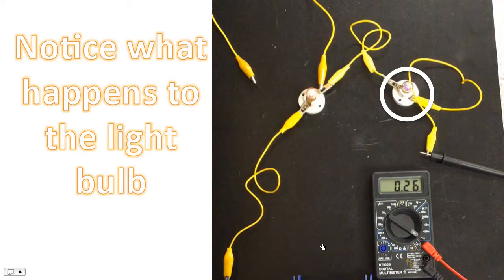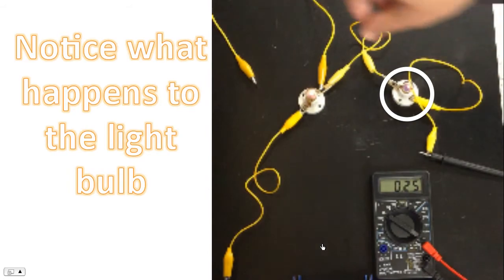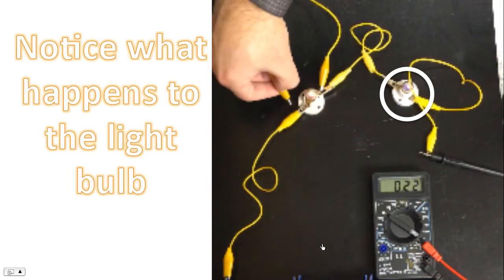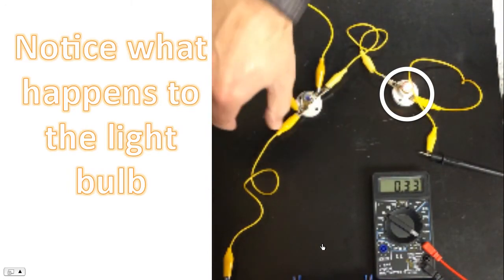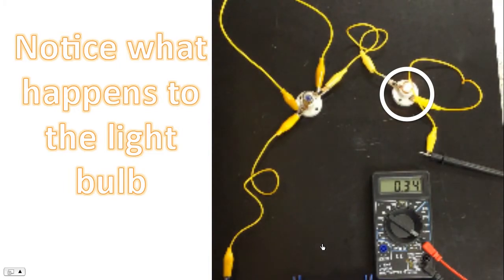I also want you to notice what happens to the other light bulb. Let's watch the video one more time. So I'm going to connect the wire. And the other light bulb, the light bulb that's circled, has gotten brighter.